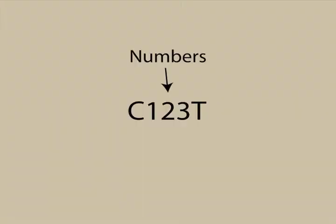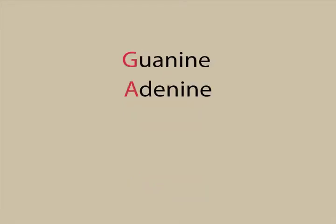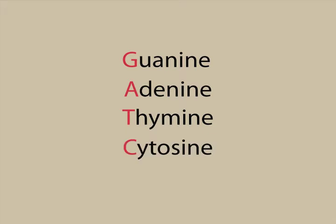SNPs are spelled out by the number position they are on the gene and by the various combinations of the letters G, A, T, and C. These letters stand for guanine, adenine, thymine, and cytosine.